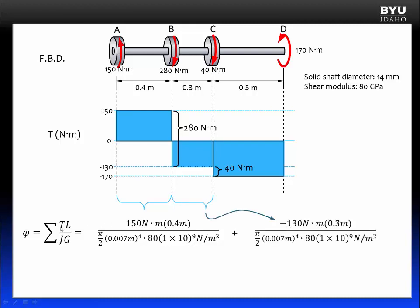From B to C, the internal torque T is negative 130 newton meters. The length is the distance from B to C, 0.3 meters. J and G are the same as before.